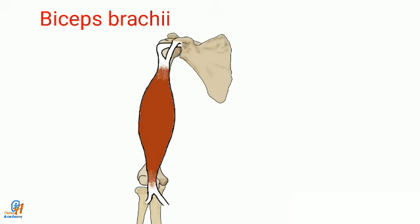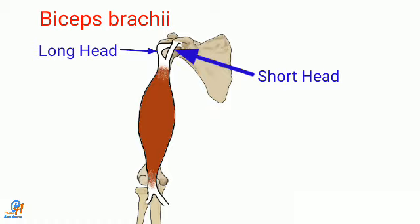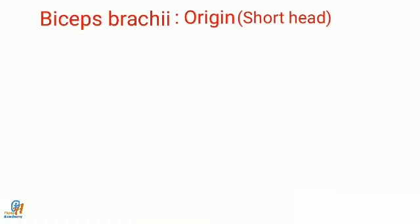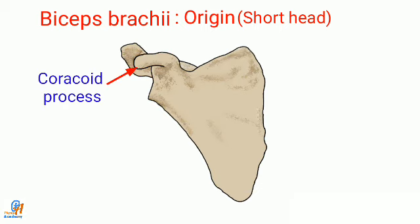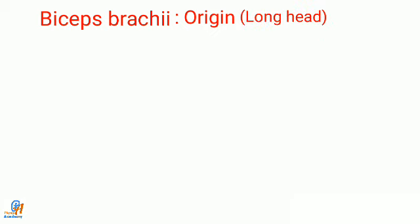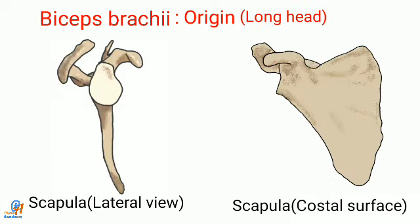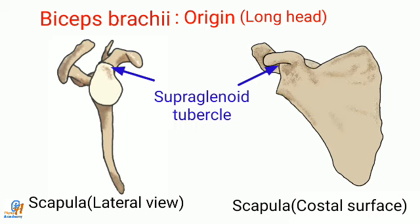The second muscle of this compartment is biceps brachii. Biceps brachii has two heads: a long head and a short head. The short head arises from the tip of the coracoid process along with the coracobrachialis muscle. The long head arises from the supraglenoid tubercle of the scapula and the glenoidal labrum.